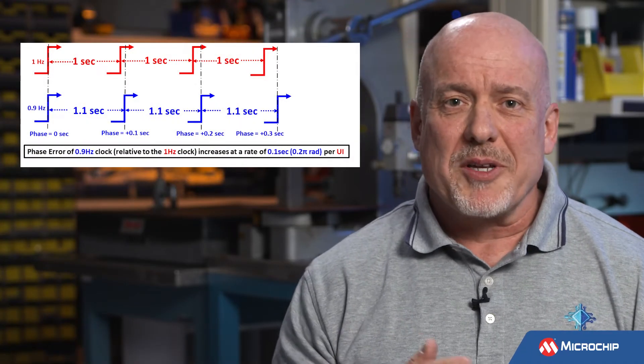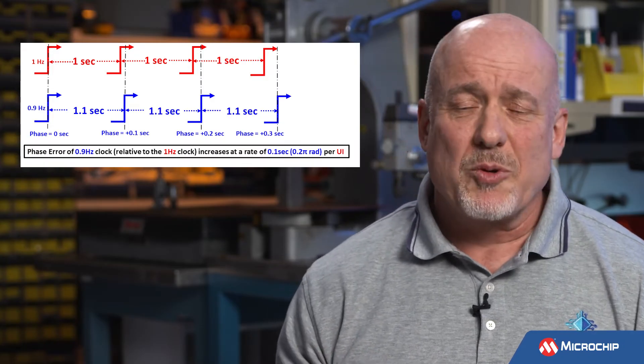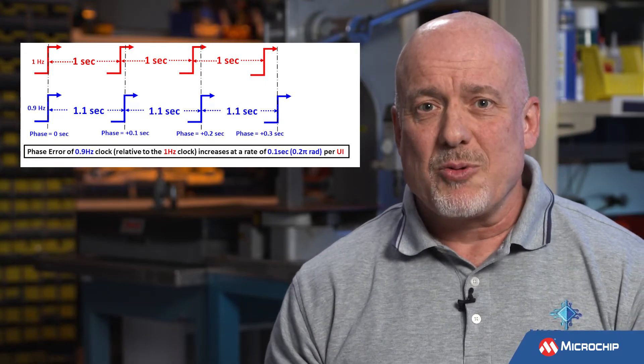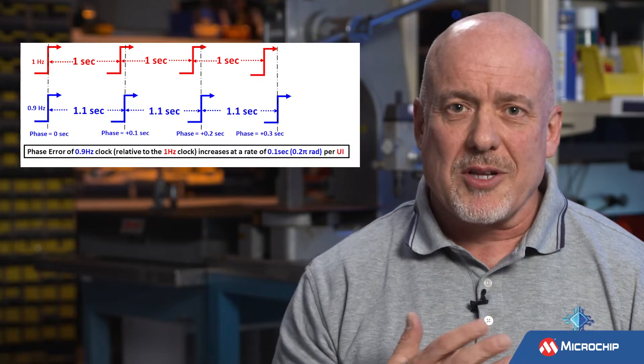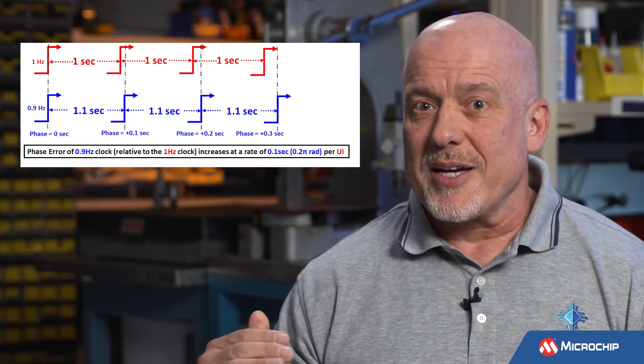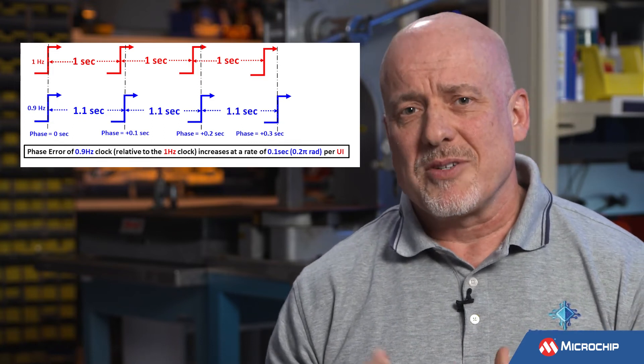To answer your question, I'm going to start with an example, because I think using an example can help clarify what we are talking about here. The simple example I'm going to use is two clocks: one running at 1.0 Hz, shown in red, and another clock, shown in blue, running at 0.9 Hz. The time interval between rising edges of the 1 Hz clock is one second, and the time interval between rising edges of the blue 0.9 Hz clock is approximately 1.1 seconds.